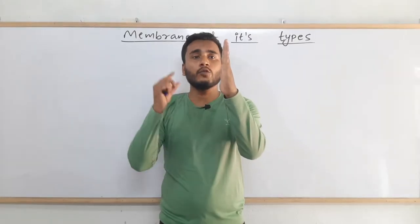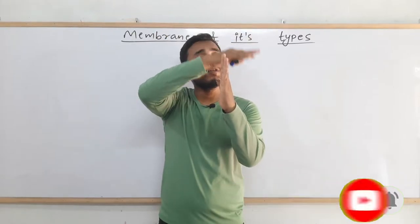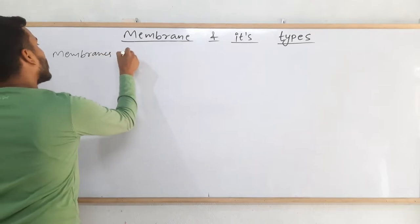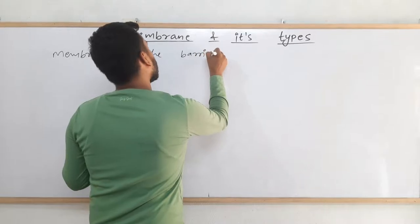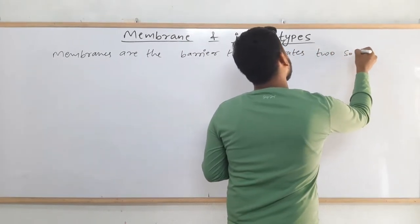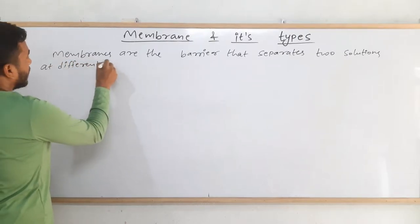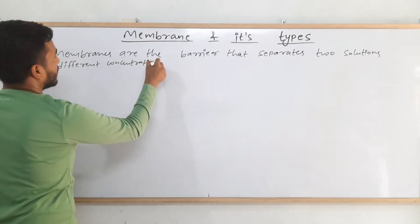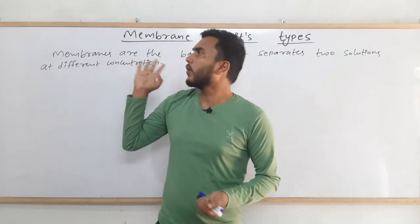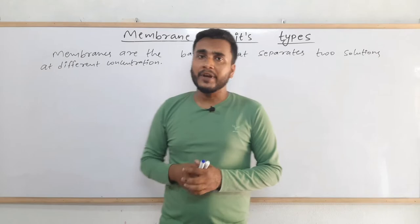In colligative properties, membranes are the barrier that separates two solutions at different concentrations. Higher concentration means it has more amount of solute, and lower concentration means it has less amount of solute. If we compare colligative property with thermodynamics, then this membrane is like the boundary of the system — the boundary separates system and surrounding, and here membranes separate two solutions.